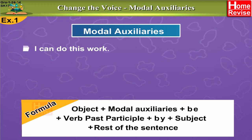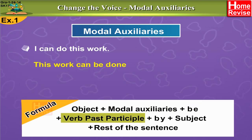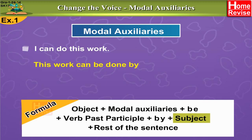Let's apply this formula to the sentence. The object is 'this work,' so the sentence begins with 'this work.' Then the modal auxiliary 'can,' followed by 'be,' followed by 'done' — the past participle of 'do' — followed by 'by.' The subject is 'I,' but in the objective case it becomes 'me.' So the answer is: This work can be done by me.